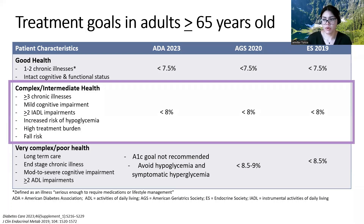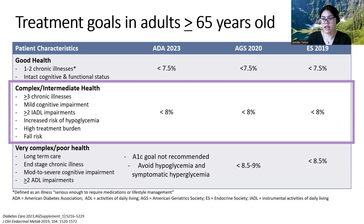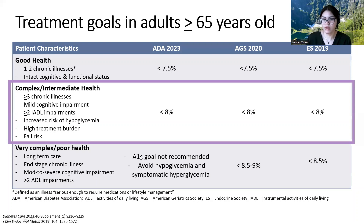Most people fall into the complex or intermediate health category — the purple box — and there's good consistency with what the goal would be. That said, if a patient has mild cognitive impairment but also an end-stage chronic illness, I would go based on the higher severity and assess them as a very complex or poor health status patient. What I always like to highlight is that for this patient category, we're really not recommending an A1C goal anymore — there's no good data to suggest it's even beneficial, but we do have data to suggest strict goals are harmful. Instead, we do the bare minimum: avoiding lows because we know that's really bad, and avoiding symptomatic hyperglycemia because that impairs quality of life.